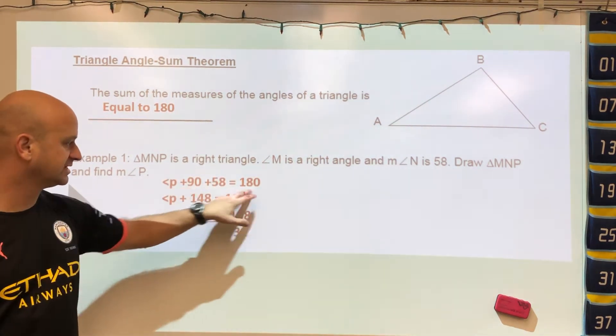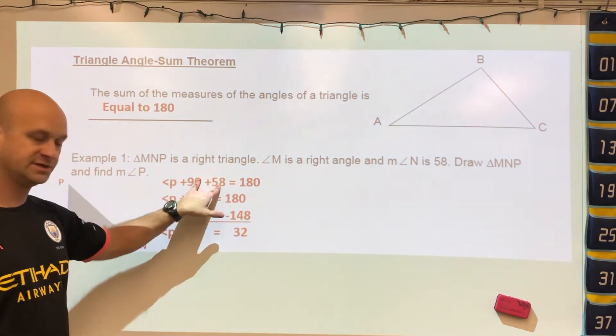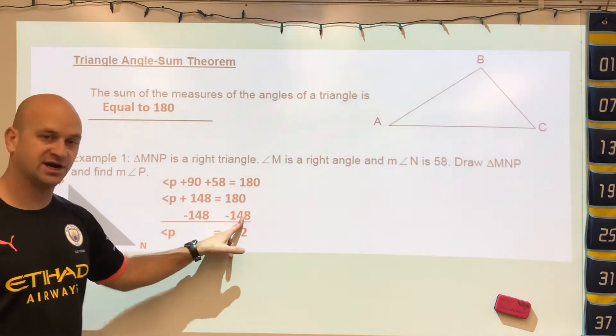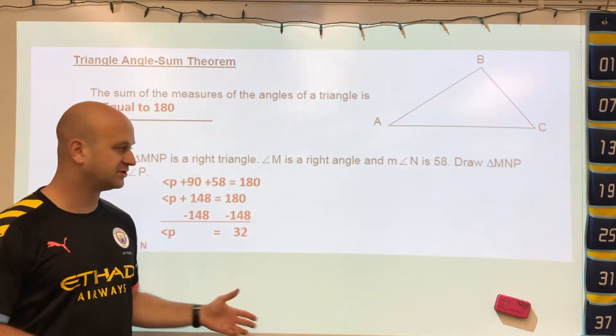We know that all three angles have to add up to equal 180. We combine like terms and then subtract, and we get our angle measure of 32 degrees.